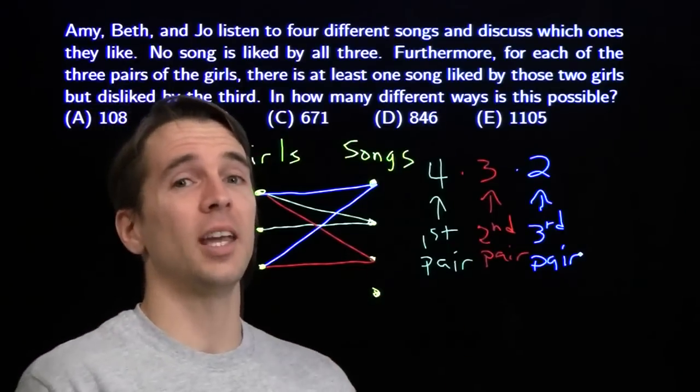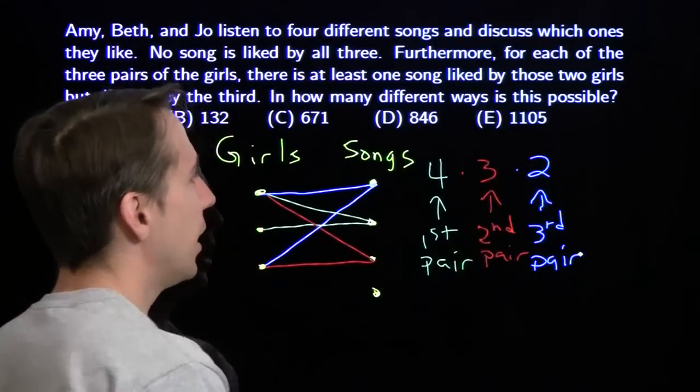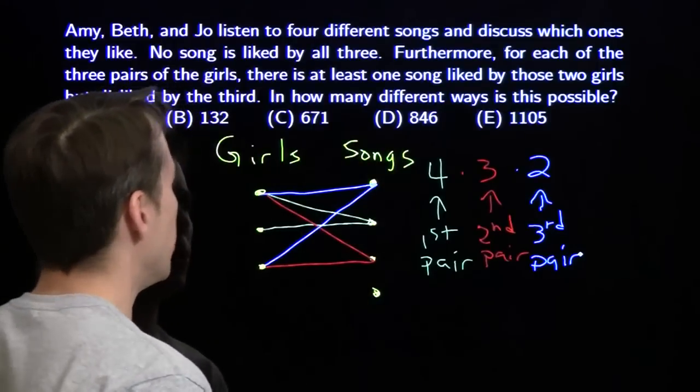Note to the AMC, one hundred sixty-eight would have been a really good distractor here. But that's clearly wrong. We can't put a seven out here, we'll get one hundred and sixty-eight. Not the right answer, not one of the choices. Should have been, though.